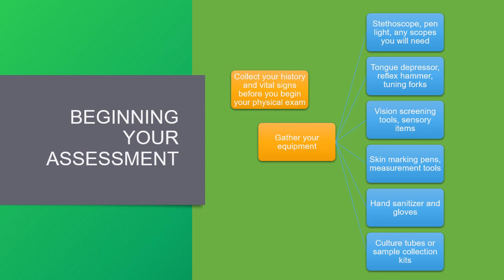Your book lists a lot of equipment that you might need. In general, in our clinical this semester, things that you might use would be a stethoscope, a pen light, and things like an otoscope or an ophthalmoscope. You may use a tongue depressor to look in the throat or teeth, a reflex hammer, or tuning forks to test for reflexes or hearing loss. Vision screening tools, sensory items such as q-tips, cotton balls, breaking of a q-tip stick for a sharper item, a paper clip. Skin marking pens and measurement tools are used for wound care. Hand sanitizer and gloves should always be at the ready. If your patient is complaining of any sort of possible infection or contamination, culture tubes and sample collection kits should always be collected prior to going in.